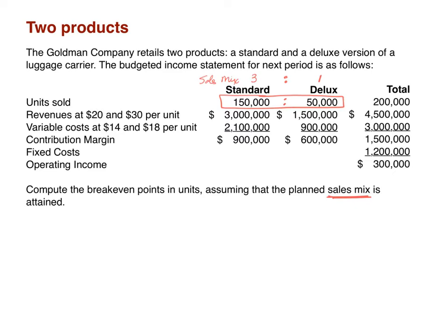Now that we have our sales mix ratio, we can think about our income statement. Step one: sales minus variable cost equals contribution margin. In this case we have two different sets of sales — standard and deluxe. The contribution margin for the standard is the $20 revenue minus the $14 variable cost, which gives us a $6 contribution margin. The deluxe has a $30 sales revenue per unit minus an $18 variable cost per unit, giving us a $12 contribution margin per unit.